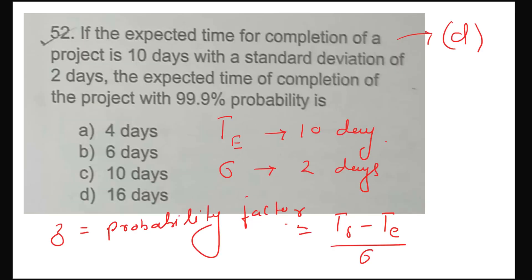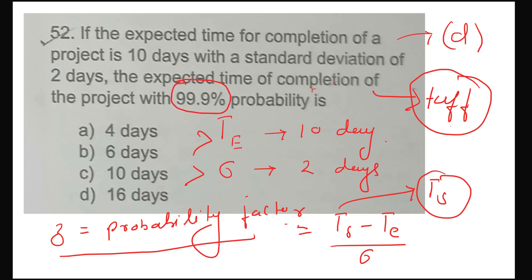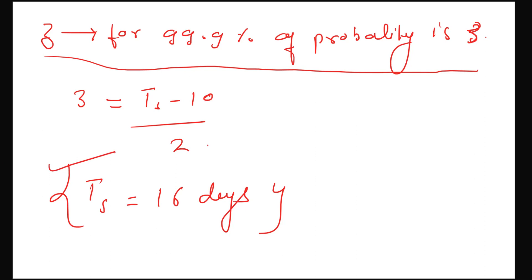Question 52 is a hard question — this numerical is tough. Such numericals are rarely asked. The data given includes expected completion time, standard deviation, and scheduled completion time. We need to find the value of ts. Corresponding to a probability of completion of 99.9%, the probability factor value will be 3. So: 3 = (ts − 10) / 2, which gives ts = 16 days. So option number D will be correct for question 52.